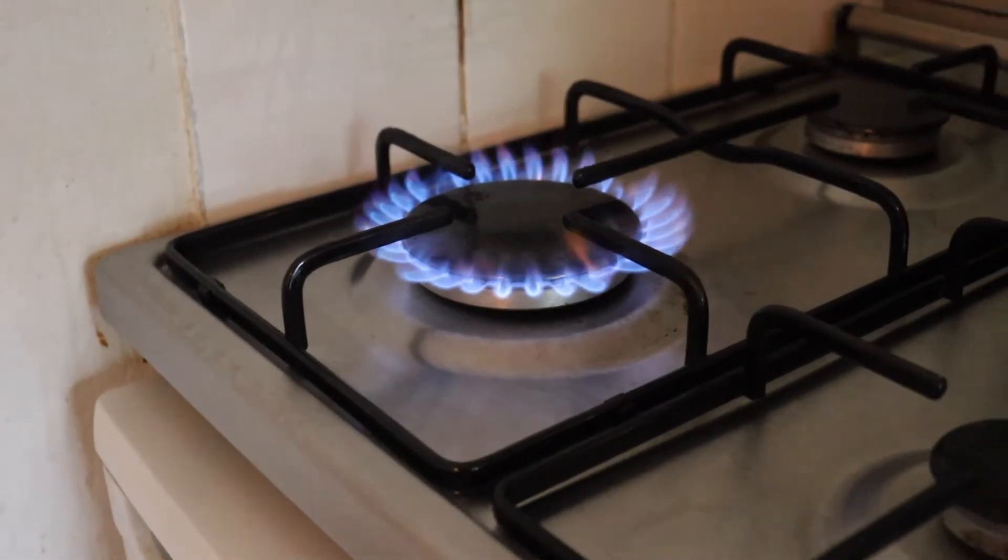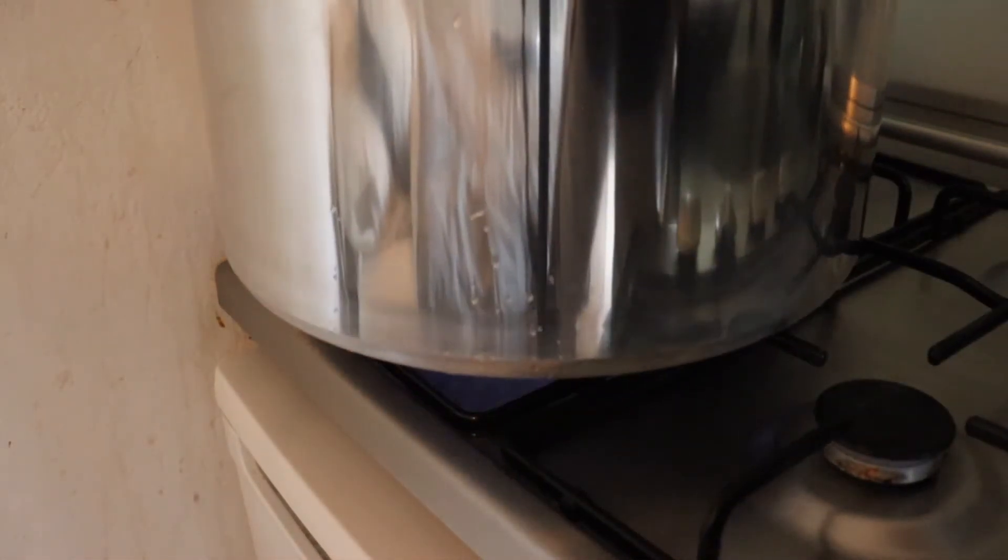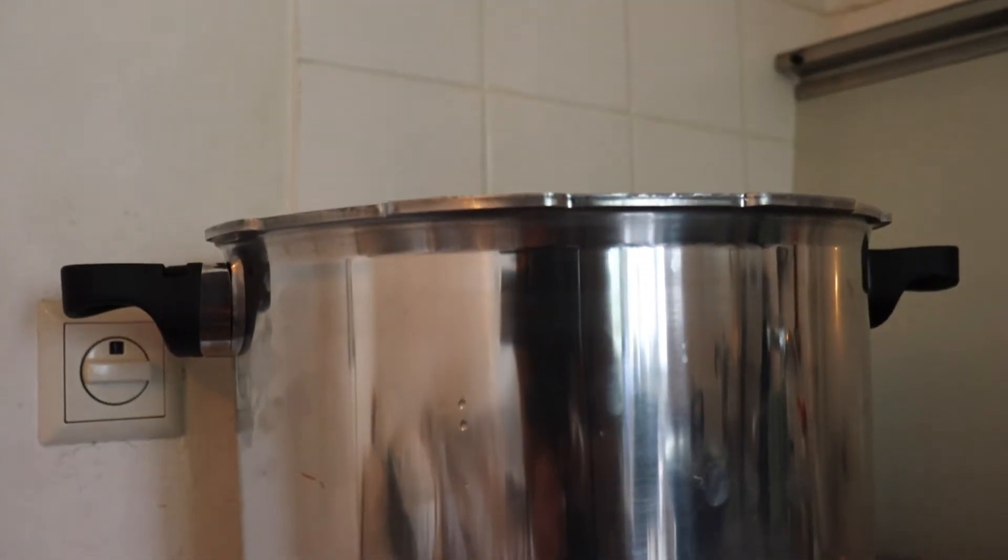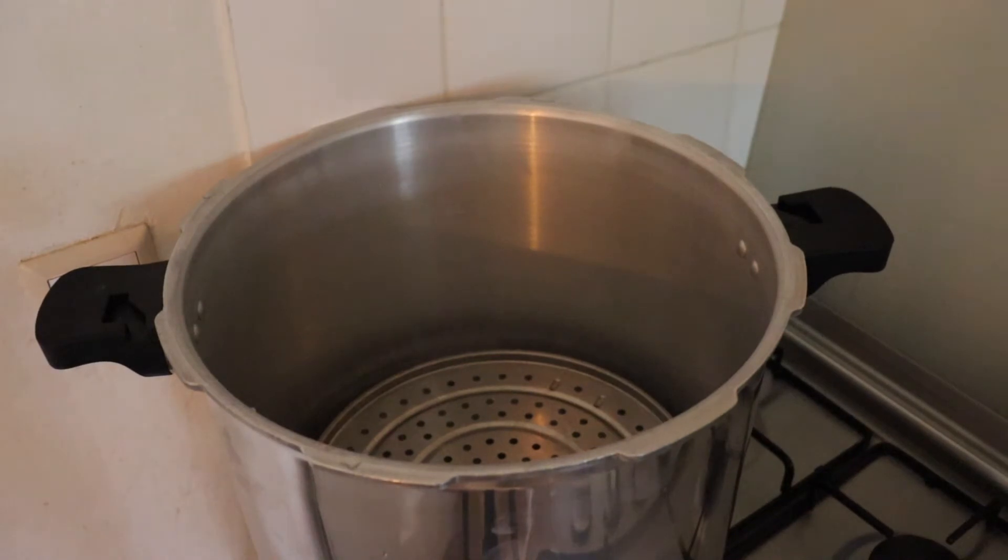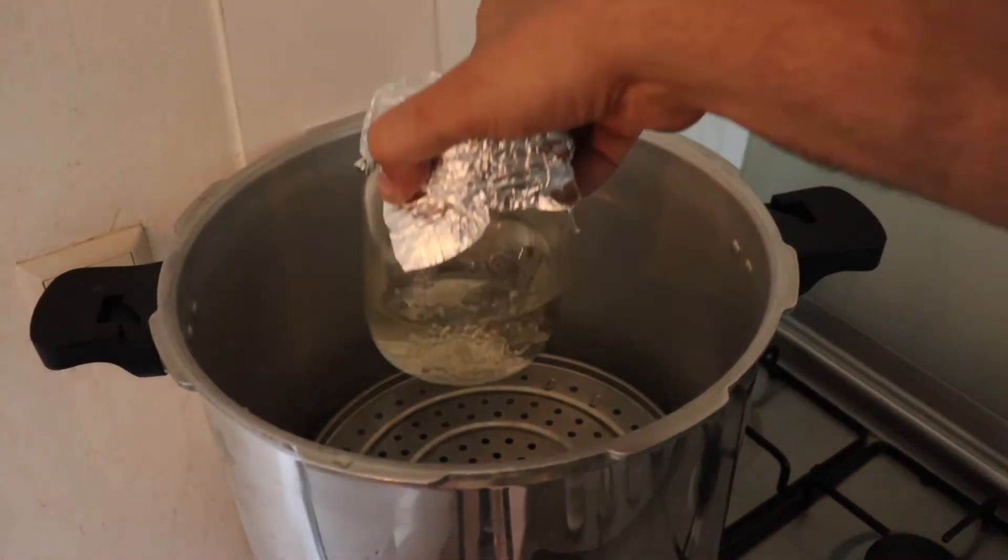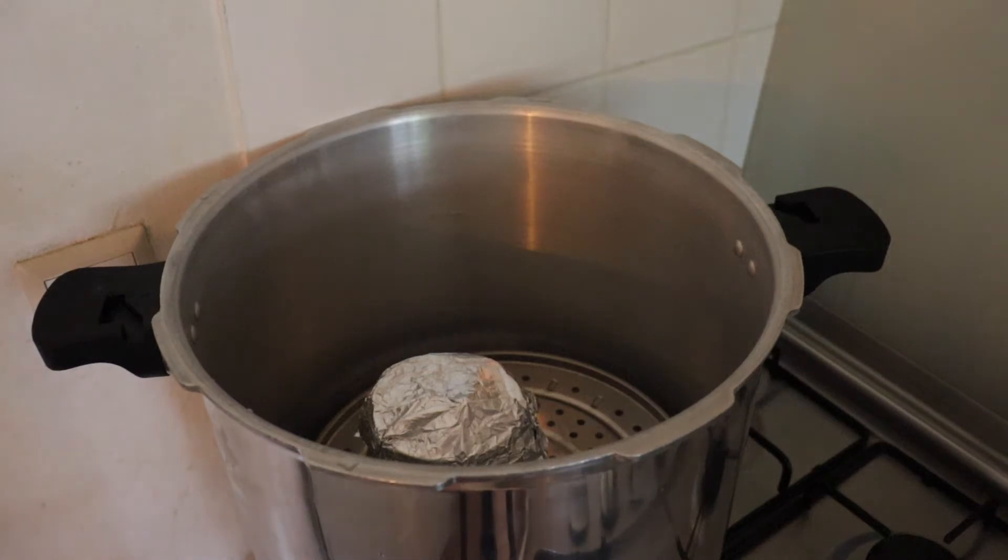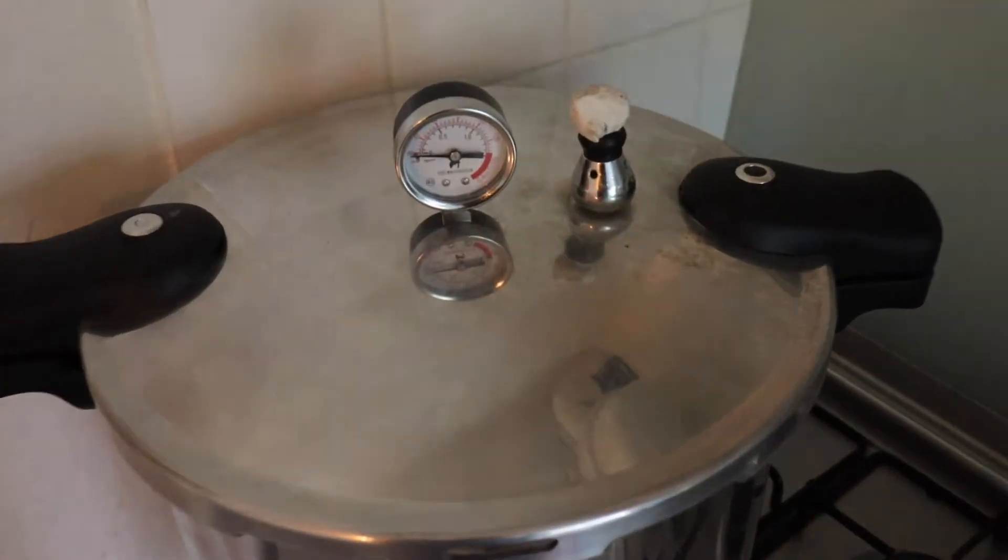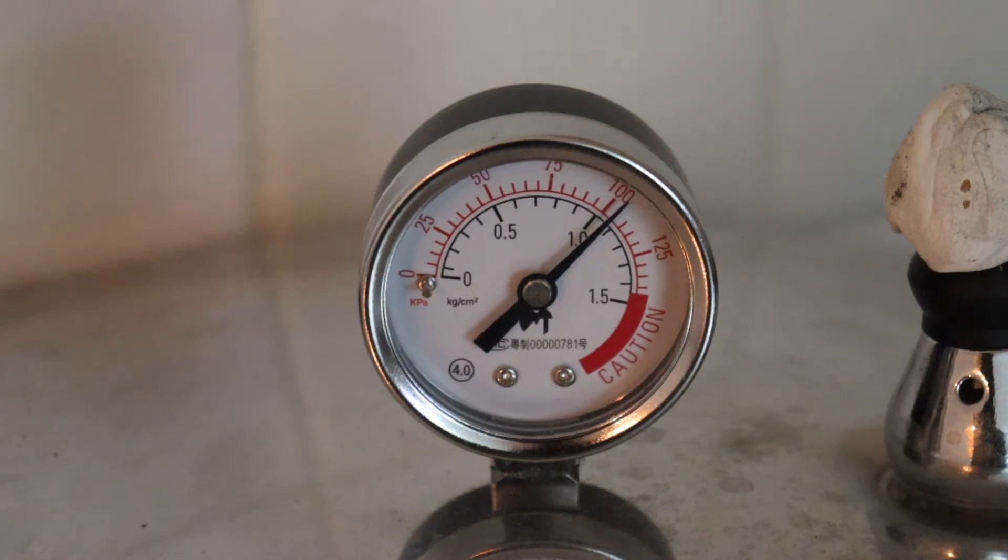Now we get ready to sterilize our culture. Get the pressure cooker on the heat. Big boy. Once you've got a bit of temperature, we put the culture in. And we put the lid on. Now it's a waiting game. It needs to get up to about 105 kilopascals or about 15 psi. Nearly there. Getting ready.